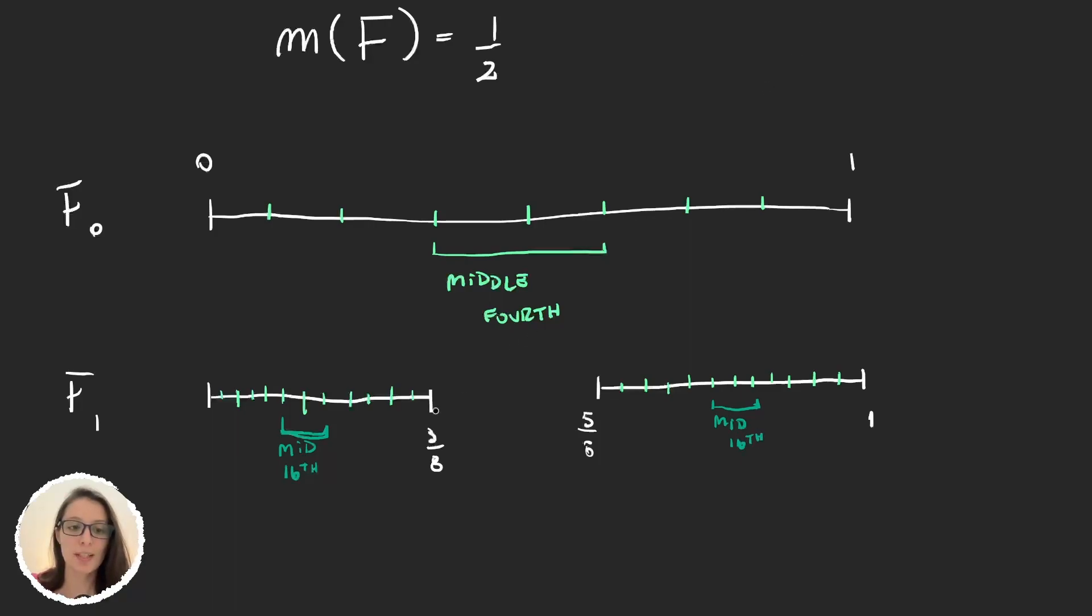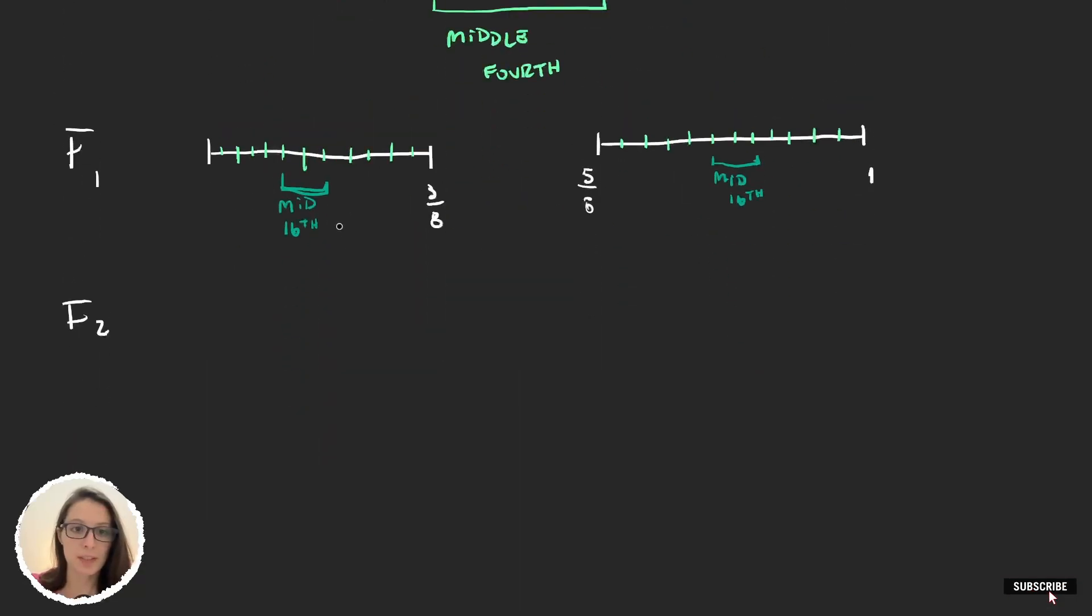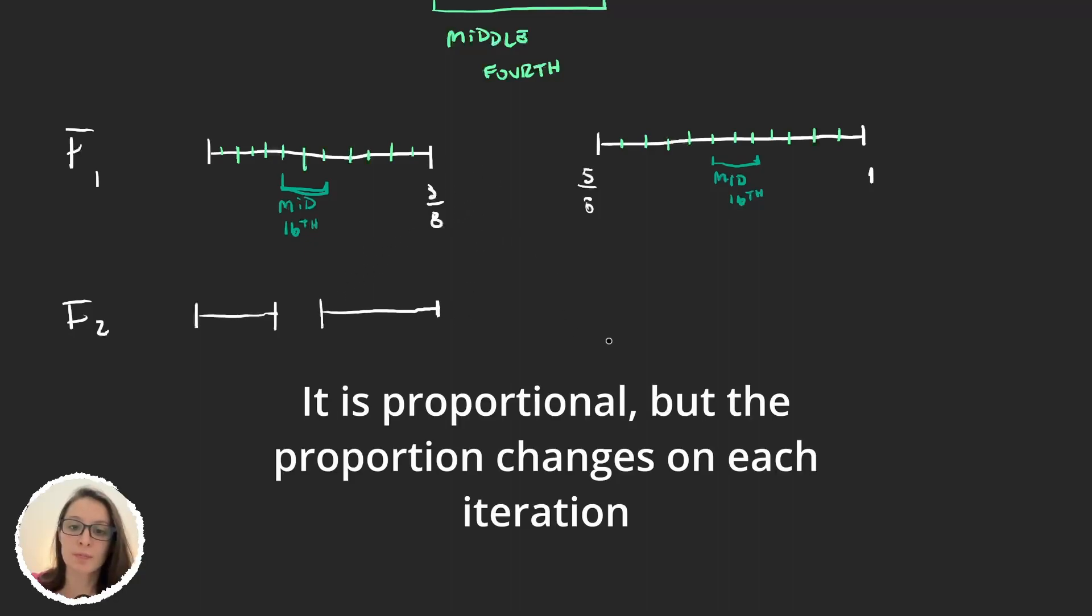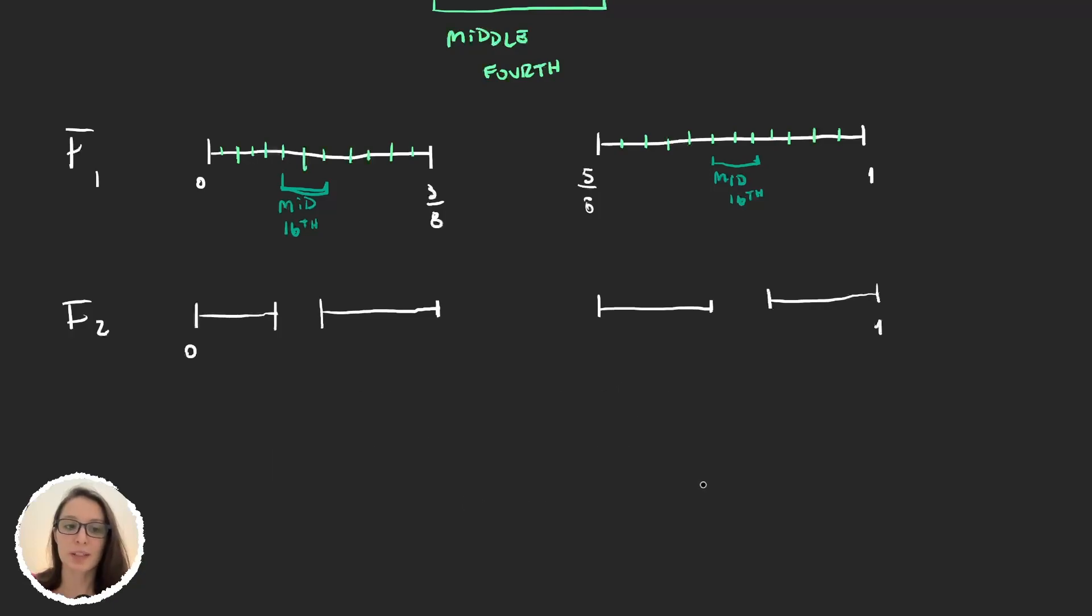So F₂ will be from zero up to this number, and from this up to here. So you can see it's not exactly proportional. Well, and you can continue like this.